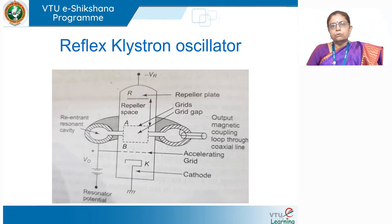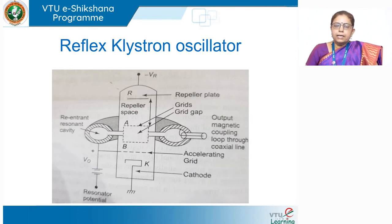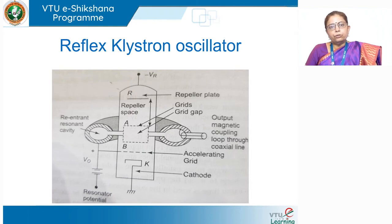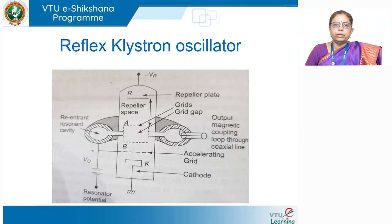Microwaves have wavelengths in the millimeter range, which is comparable to device dimensions. This brings in lot of changes in device behavior, which is why we have a separate set of devices for the microwave domain. These devices were initially vacuum tubes, and then as semiconductor research progressed with materials like gallium arsenide, gallium nitride, silicon carbide, newer semiconductor diodes, transistors, and FETs also started giving high power outputs.